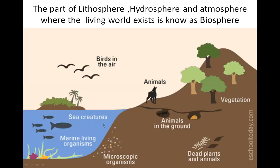The part of lithosphere, hydrosphere and atmosphere where the living world exists is known as biosphere. Biosphere is one of the important aspects on earth. Earth is the only planet in the solar system having biosphere, because biosphere includes vegetation, animals, insects and human beings. We obtain food and many other necessary things from biosphere. We cannot live without vegetation and animals. Biosphere is the base of our existence and living.